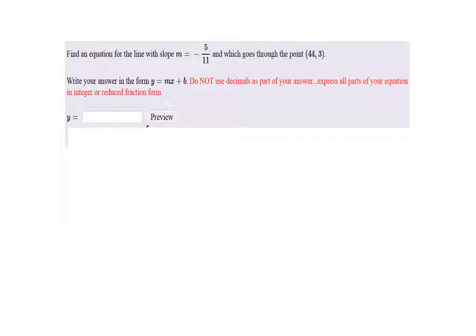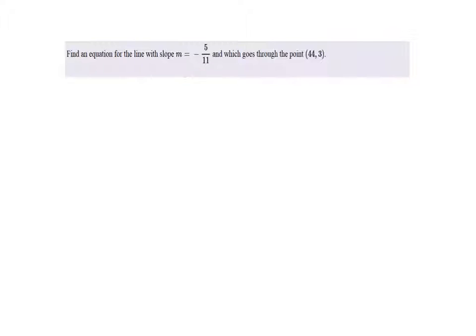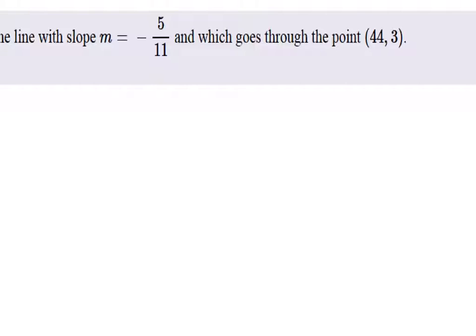Let's change this to slope-intercept form, a line with this slope going through that point. And this one isn't too bad, so we got this point-slope form.